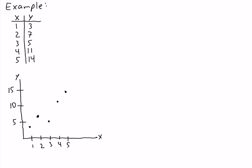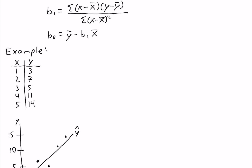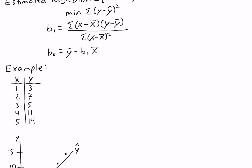In the least squares method, we're looking for a line that fits through this data. The line is our estimated regression line y-hat. To get the equation of this line, we need to find the slope b1 and the intercept b0 using the formulas. We're going to add a couple of columns to our table to calculate b1 and b0.